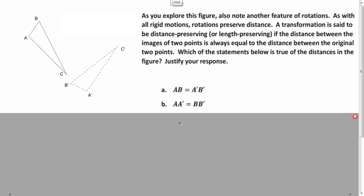Well, the first one is saying that AB is the same length as A prime B prime. And that's true, right? We have a rotation here, and we know that rotations preserve distance.